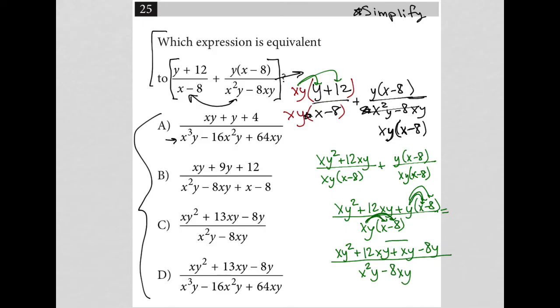So it looks like I have some common terms here, 12xy plus xy, which is just 13xy, which I'll write up here. So just give myself some space. I should have, at the end of the day, xy² + 13xy - 8y all over x²y - 8xy.